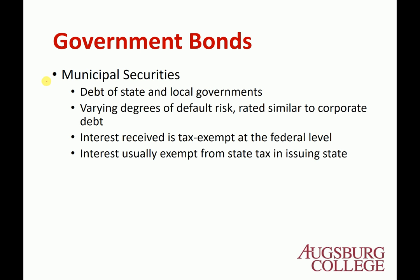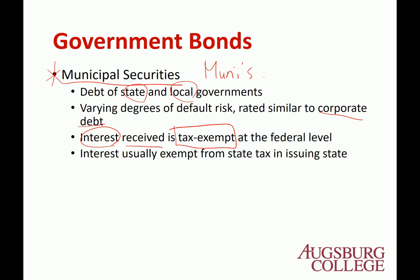There is another type of government bond called municipal securities, also called munis. These are issued by state or local governments. The risk is actually very similar to the corporate bond. Some state or local governments sometimes declare default or a moratorium — delaying their payment. So it is rated by rating agencies and has similar risk to a corporate bond. But unlike corporate bonds, the interest you receive from munis is actually tax exempt — you don't have to pay federal tax on this interest. Also, interest is usually exempt from state tax in the issuing state.